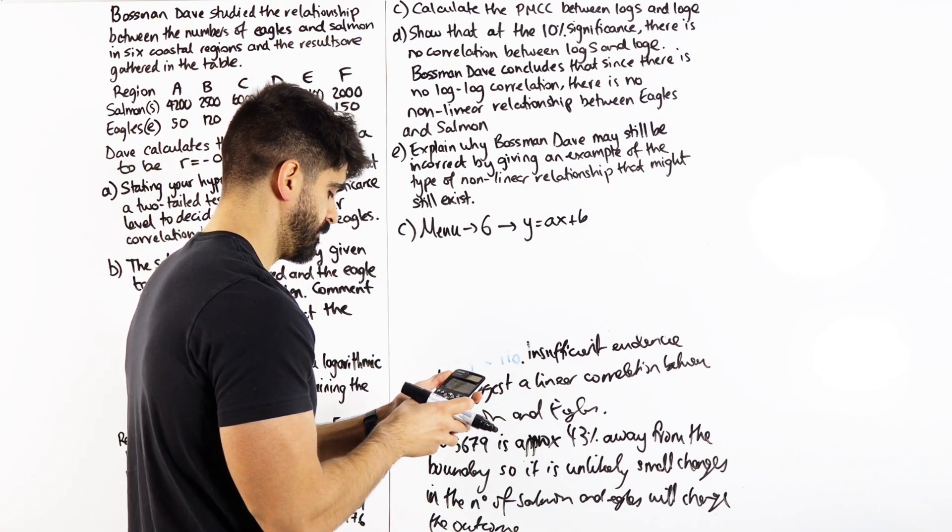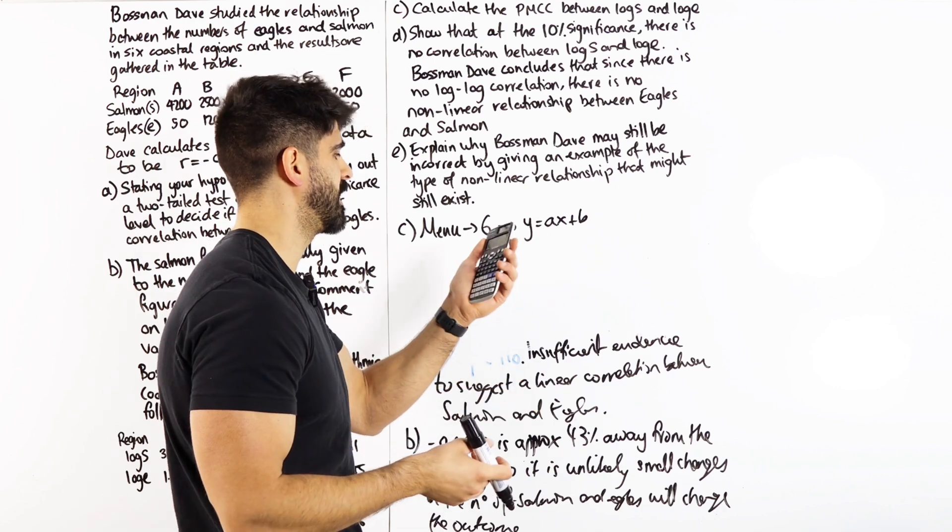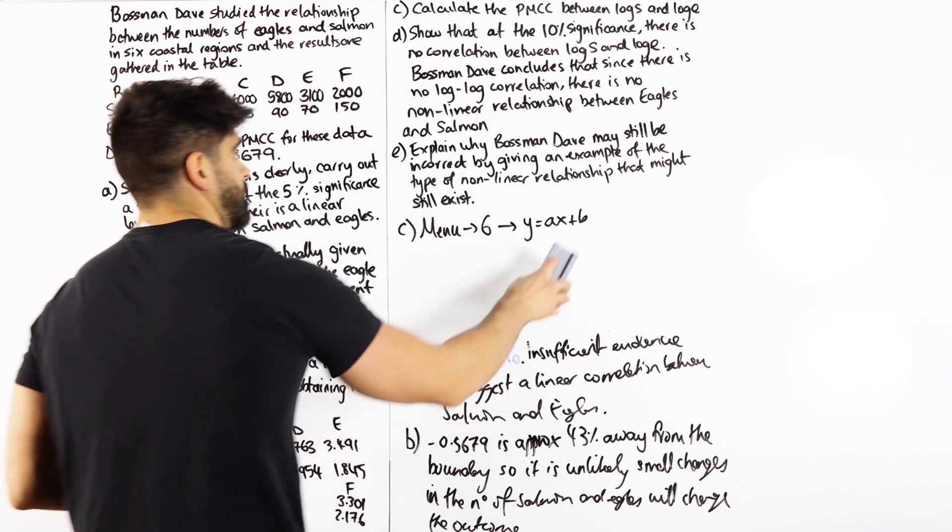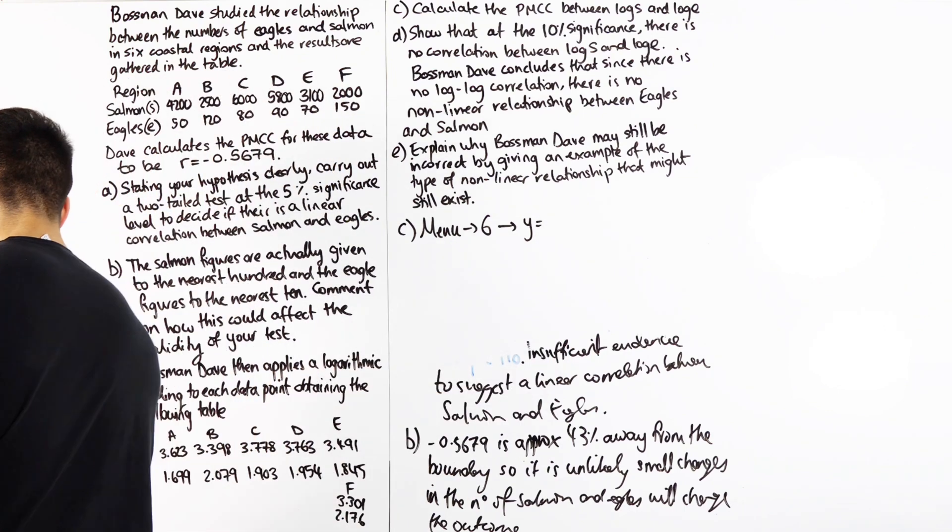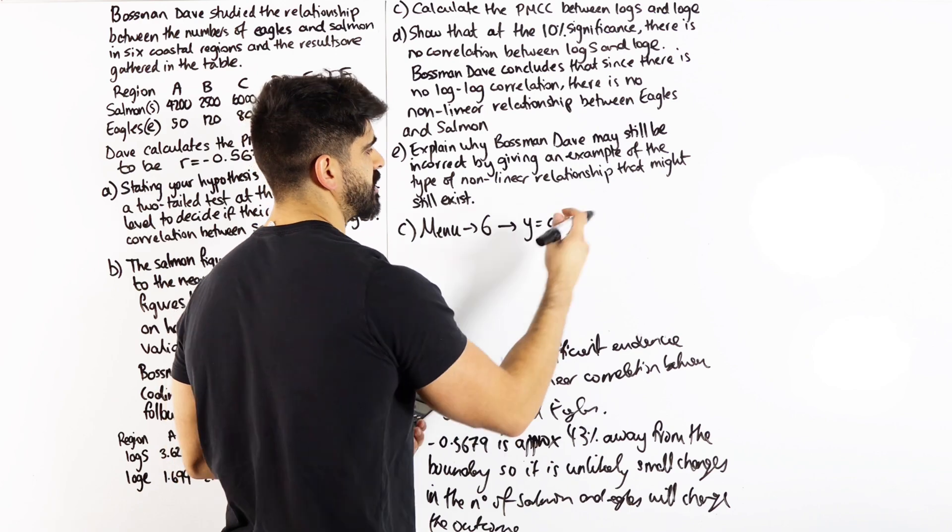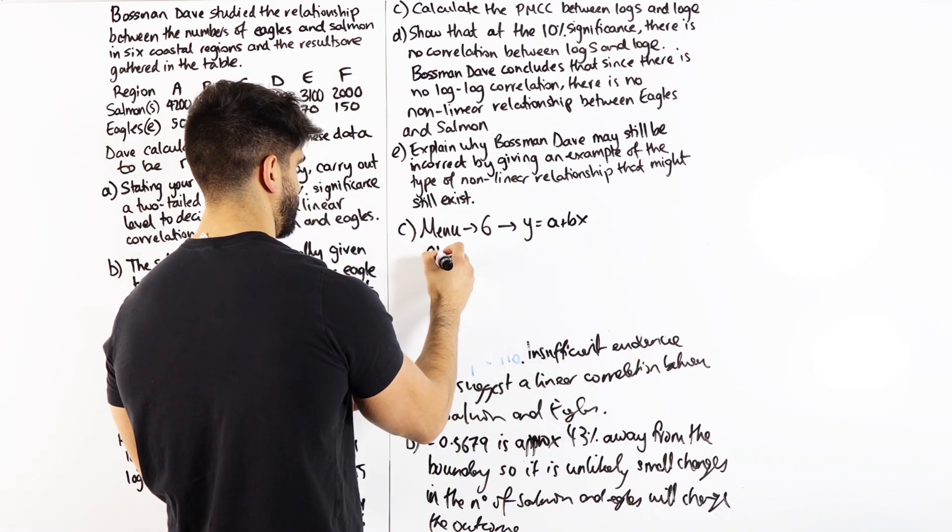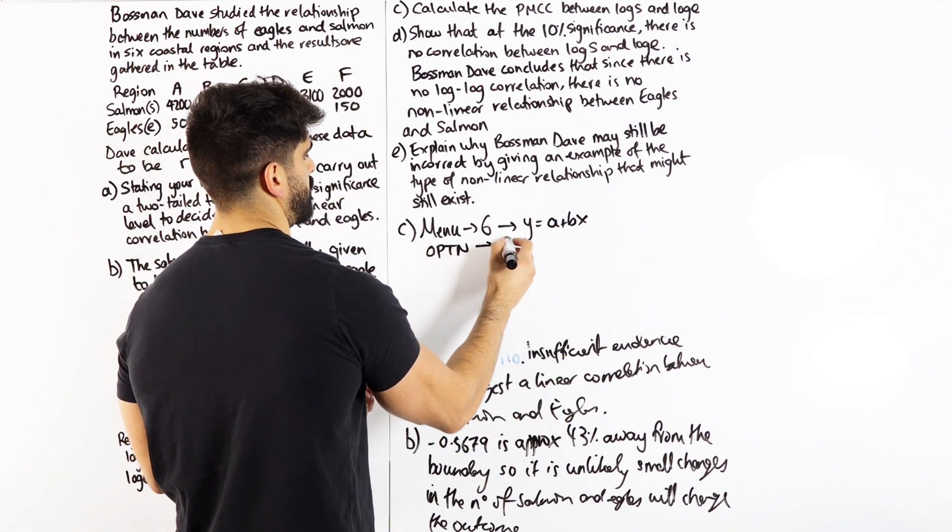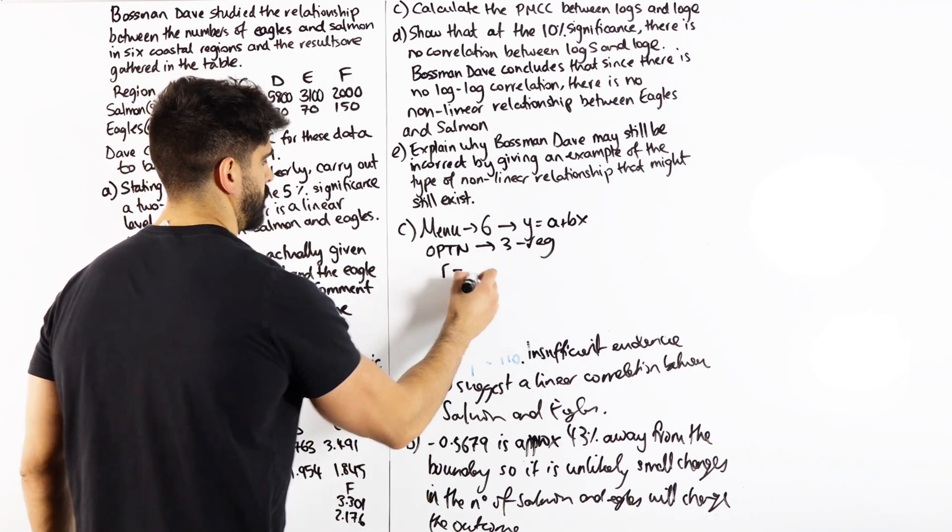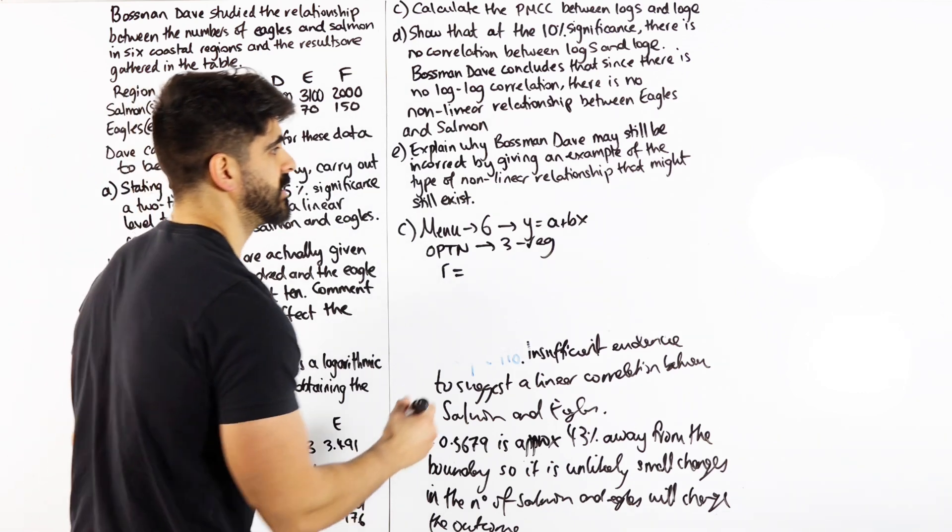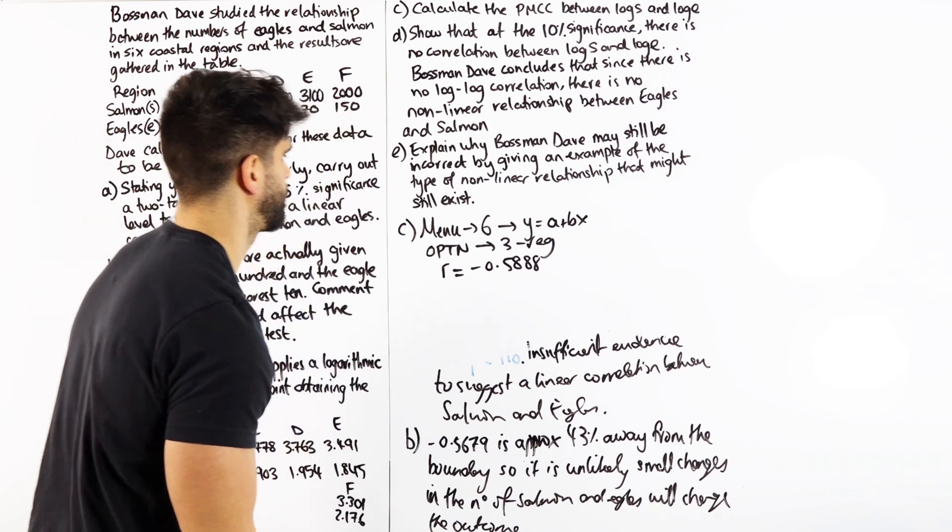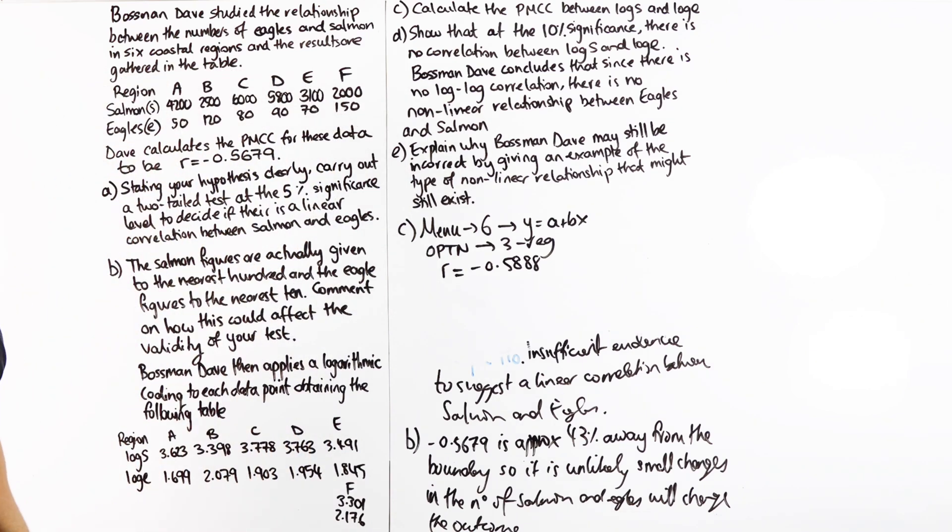I've got the best calculator in the world, the 991EX. You go menu, then 6, then you go to y equals AX plus B. Or A plus BX, mine actually says A plus BX. Doesn't really matter. And then from there you just type in your data. You type in your data, then you go to option, and then you do number 3 for regression data. And when you do that, you get an R value for this to be minus 0.5888. You can check it yourself. I recommend you do check it.